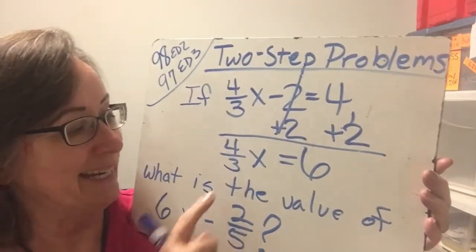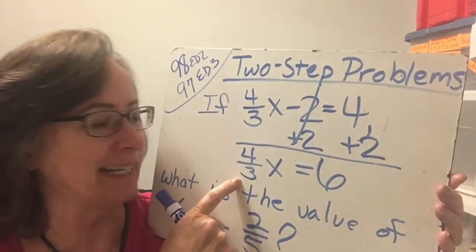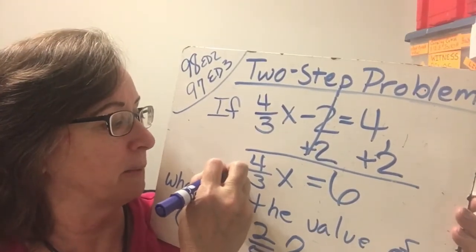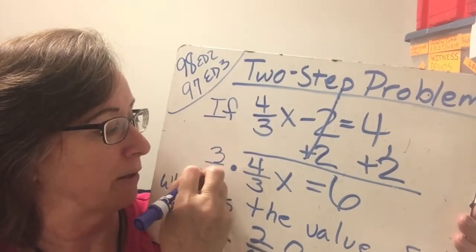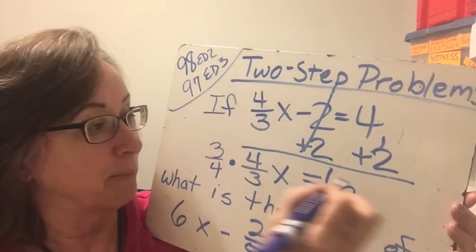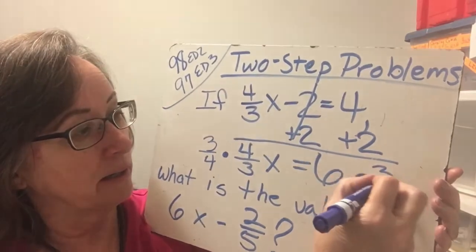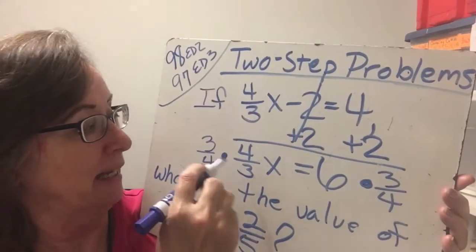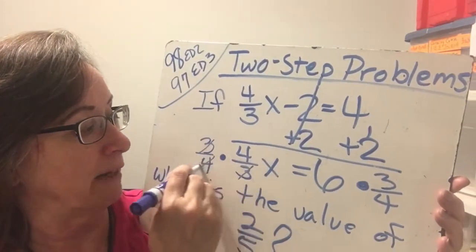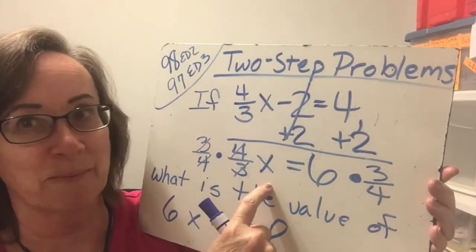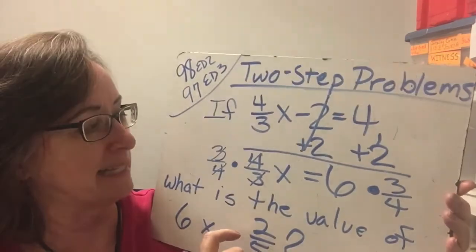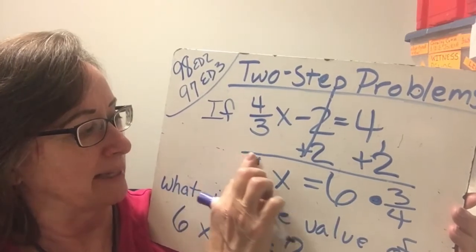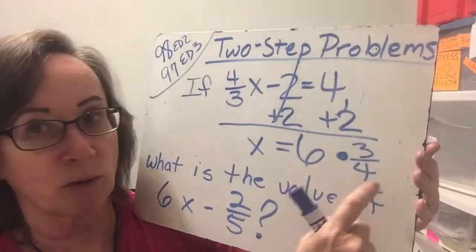So now, anytime I have a fraction that I need to get rid of, I like to multiply by the reciprocal. So I'm going to multiply by the reciprocal of 4 thirds, which is 3 fourths. But I must do the same thing over here. So I'm multiplying both sides by 3 fourths, which is legal. And then notice that the 3 and the 3 and the 4 and the 4 cancel, and I get my x all by itself. So let's see what the x equals. I'm going to go ahead and get rid of these here because they canceled out.